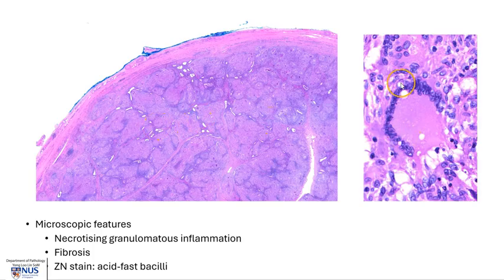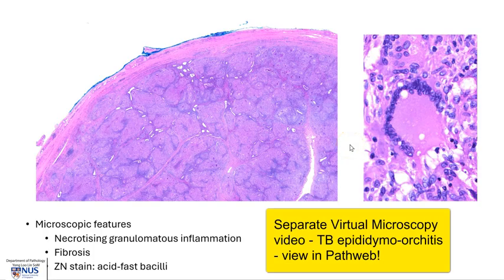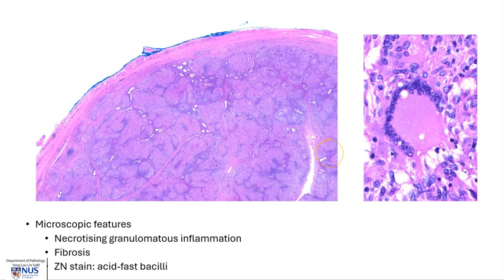Here is a high magnification view of a Langhans giant cell. This is a multi-nucleated giant cell where the nuclei are arranged in a horseshoe-shaped arrangement, and this is commonly seen in tuberculosis, though not a specific finding. There will be a separate microscopic video describing the features of tuberculosis epididymal orchitis on virtual microscopy.